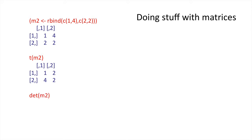You can do lots of stuff with matrices with the built-in functions in R. For example, let's have a look at this where we've defined m2 as a combination of 1,4 and 2,2 which are row bound. This is what we get looking at the matrix here. We can transpose that matrix by swapping the rows and columns simply using the t function.